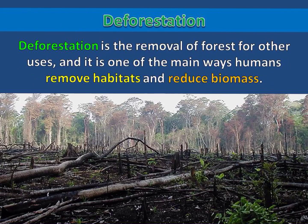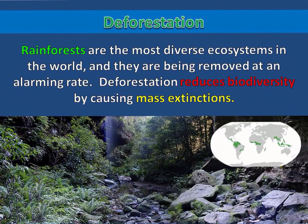Deforestation is the removal of forests for other uses, and it is one of the main ways humans remove habitats and reduce biomass. Rainforests are the most diverse ecosystems in the world, and they are being removed at an alarming rate. Deforestation reduces biodiversity by causing mass extinctions.